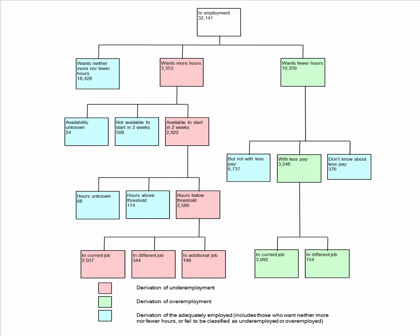How do we measure underemployment? This chart from the ONS provides a useful flow chart to arrive at a figure. Of the 32 million plus people in work, around 10 to 11% actually want more hours — shown in the pink/orange segment. To be counted as underemployed, you have to be looking for a new job with longer hours to replace your main job, or you want to work longer hours in your current job. You also have to be able to start within two weeks, have hours below the threshold, broken down into people in their current job, a different job, or an additional job.